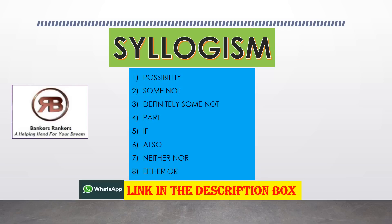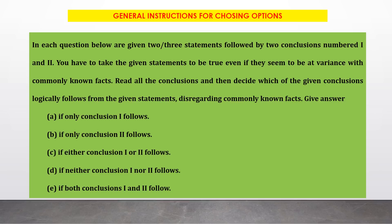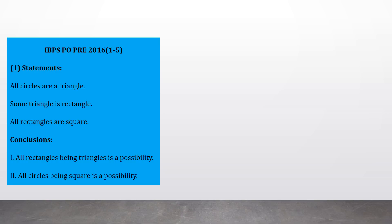If you want to download the PDF which consists of all the questions we are discussing, you can join our WhatsApp group — the link is given in the description box. In these questions, a set of statements is given to you; you have to consider those statements correct even if they are incorrect according to facts. Based on the given statements: if only conclusion one is true, the answer is option A; if conclusion two is true, option B; if either conclusion one or two is true, option C; if both conclusions are false, option D; if both are true, option E. The first five questions were asked in IBPS PO Preliminary 2016.